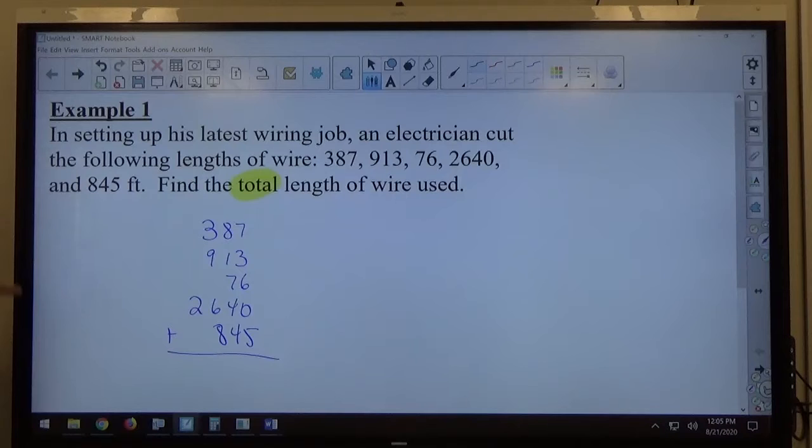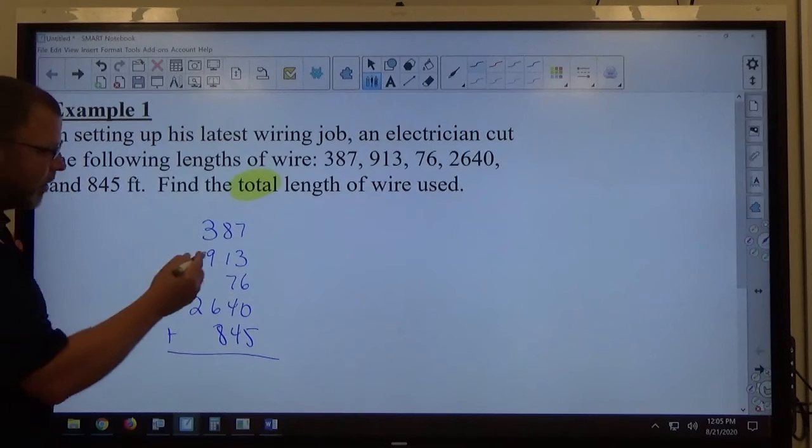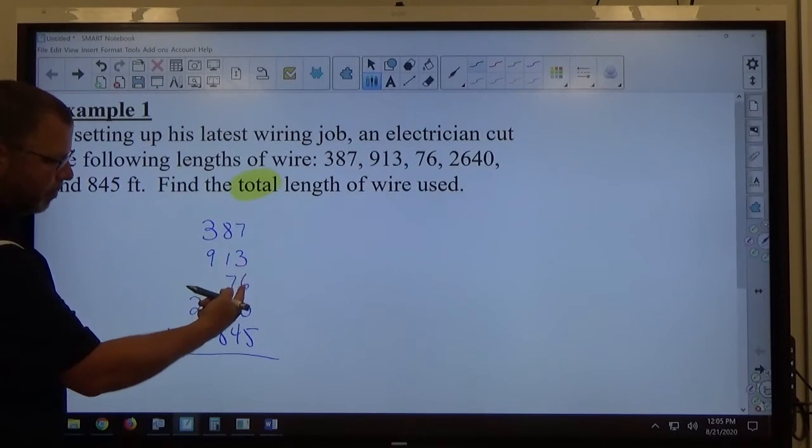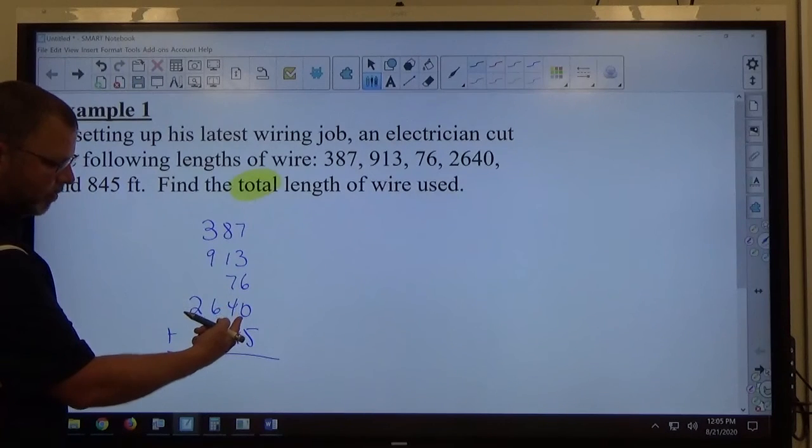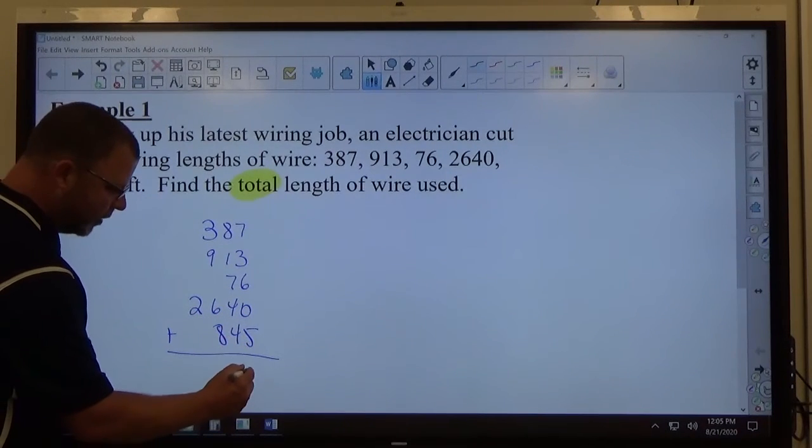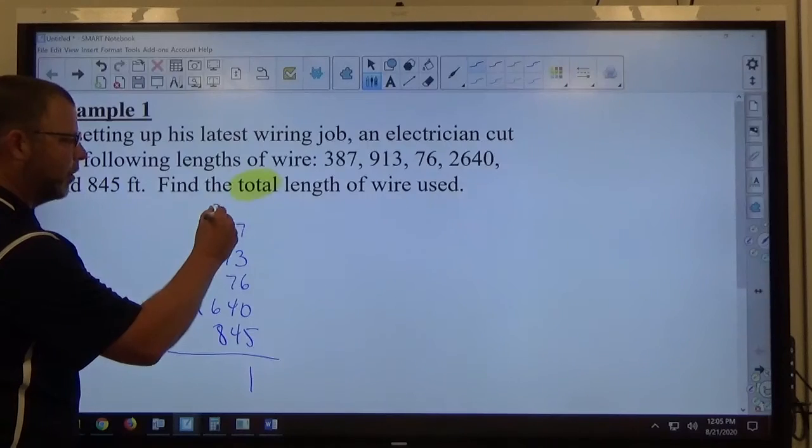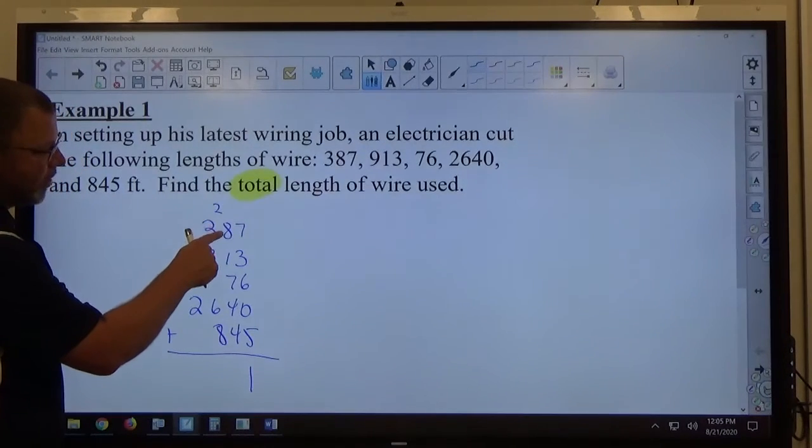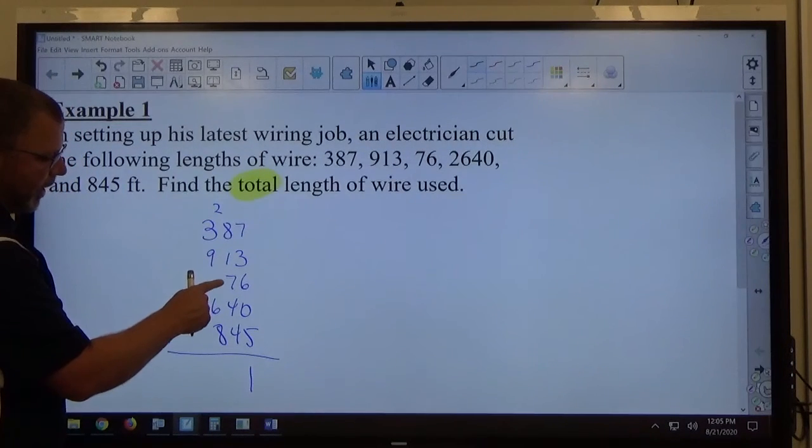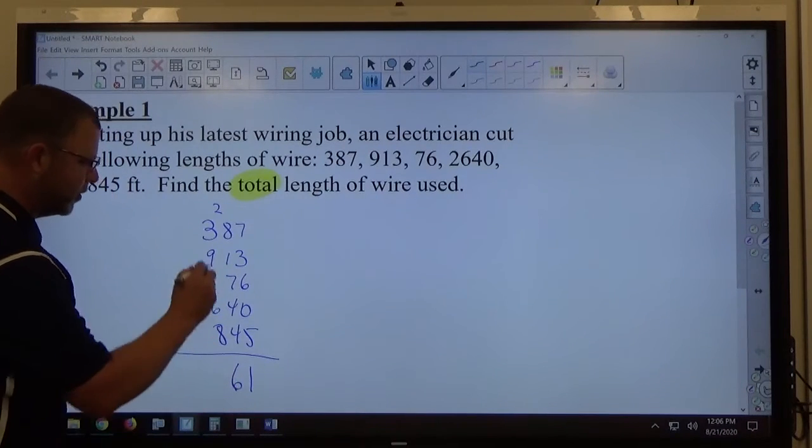We're going to add straight down the units column, carry if necessary. 7 plus 3 is 10, plus 6 is 16, 0 doesn't count, plus 5 is 21. That's 1, carry the 2. 2 plus 8 is 10, 11, 18, 22, 26, that's 6, carry the 2.